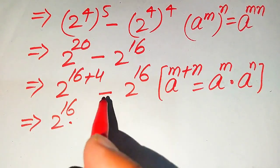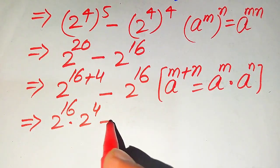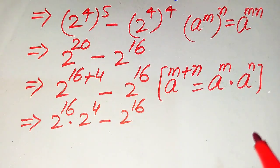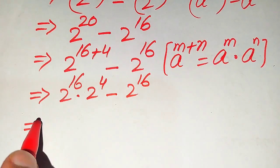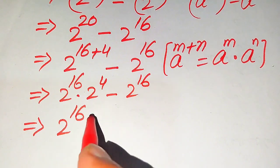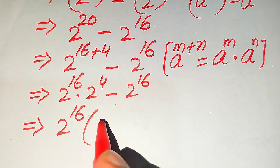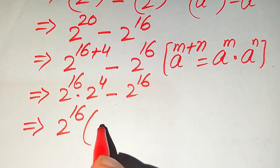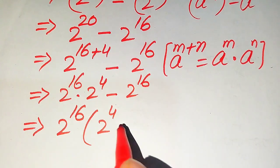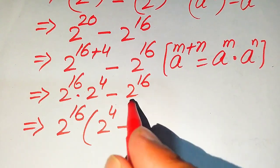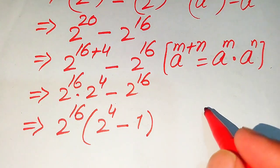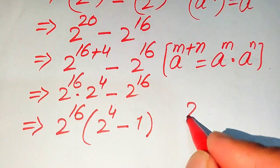Applying this rule, we break the exponent and write: 2^16 multiplied by 2^4, minus 2^16. Both terms involve 2^16, so we take 2^16 as a common factor, leaving 2^4 minus 1 inside the brackets.